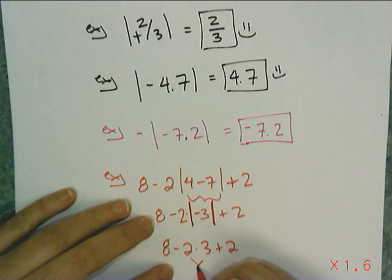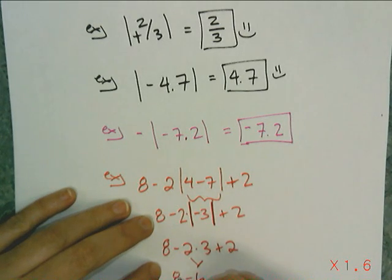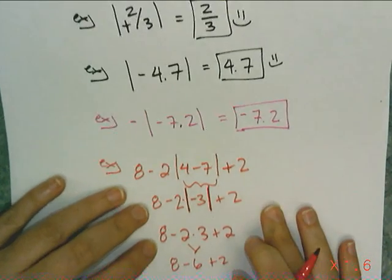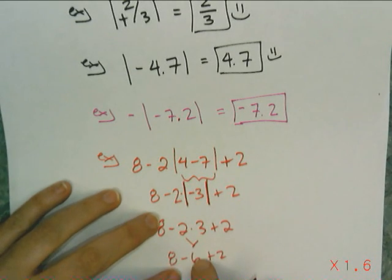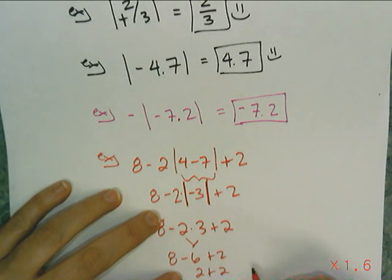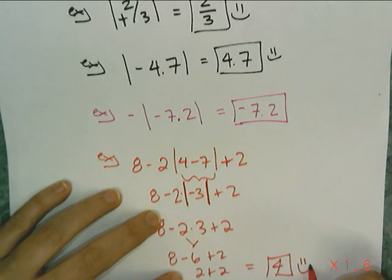2 times 3 is 6, so then I have 8 minus 6 plus 2, follow the order of operations. 8 minus 6 is 2 plus 2, gives me 4. Box it off, happy face.